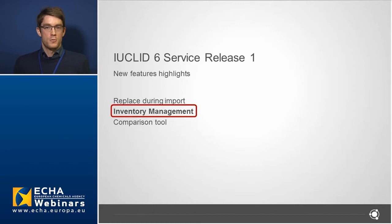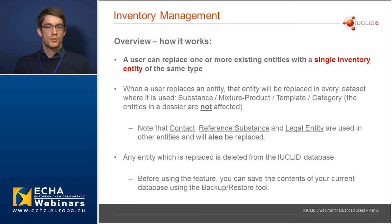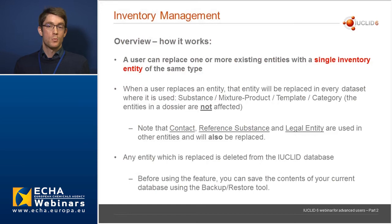Moving on to the inventory management feature of IUCLID. The purpose of this is to help users better manage their inventory entities, including test material information, legal entity, legal entity sites, reference substance, contact, and literature reference. Note that this does not include your chemical inventories. A user can replace one or more existing entities with a single inventory entity of the same type, and that entity will be replaced in every data set where it is used — substance, mixture product, template, or category. Entities in the dossier are not affected as these are read only.